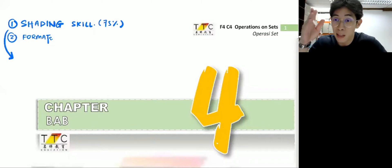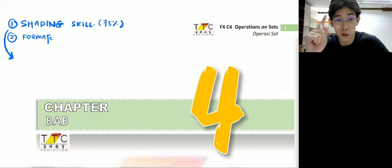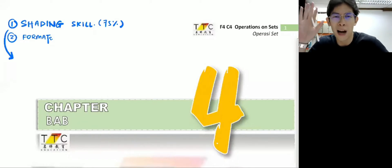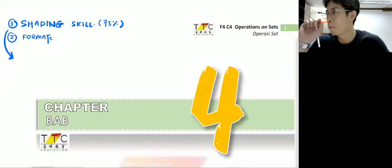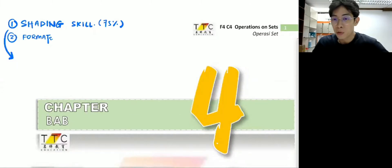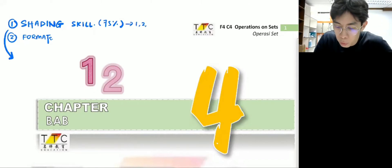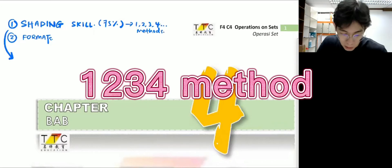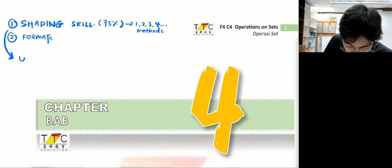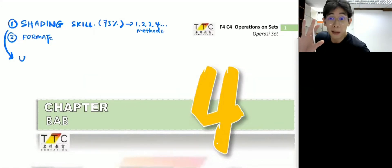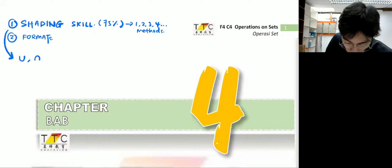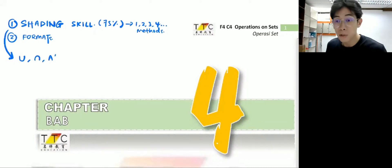This shading skill is not just my way of doing it. I used to use the understanding way and it didn't work well. Your teacher will likely use this skill too because it's the easiest to apply — it's called the one-two-three-four method. You need to know three symbols: the n-shape, and the prime symbol.